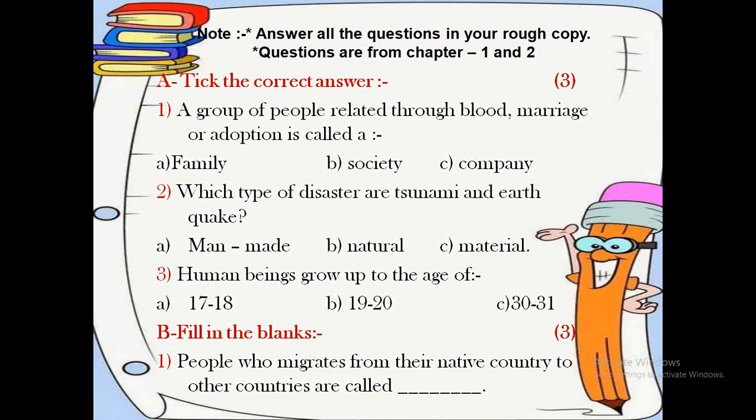Question number 3: human beings grow up to the age of — Option A: 17 to 18 years, Option B: 19 to 20 years, or Option C: 30 to 31 years.